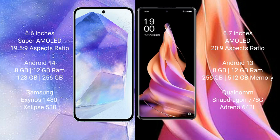Samsung Galaxy A55 comes with 8GB or 12GB RAM and 128GB or 256GB internal storage, with the Samsung Exynos 1480 processor and GPU X68 513. Oppo Reno 9 comes with 8GB or 12GB RAM and 256GB or 512GB internal storage, with a Qualcomm Snapdragon 778G processor and GPU X68 421.